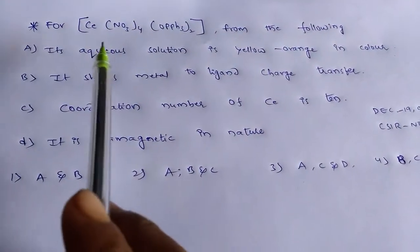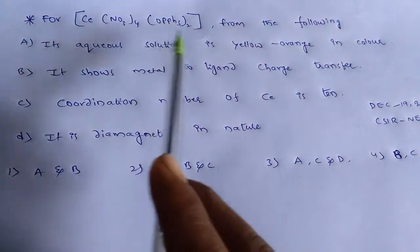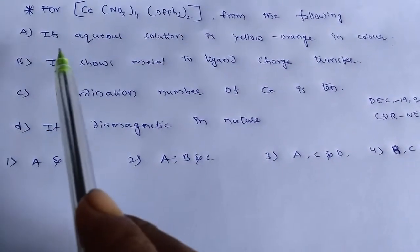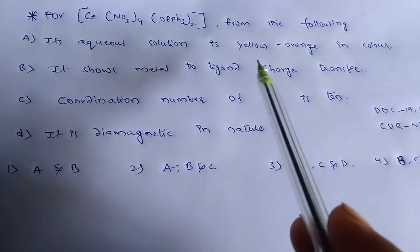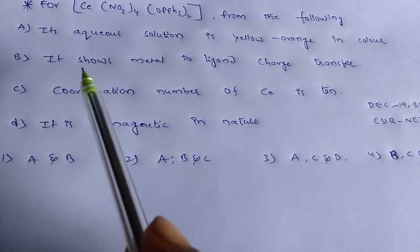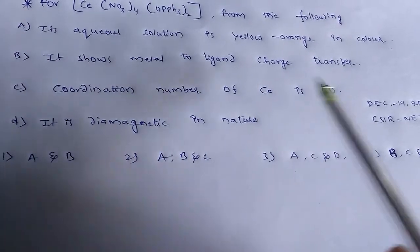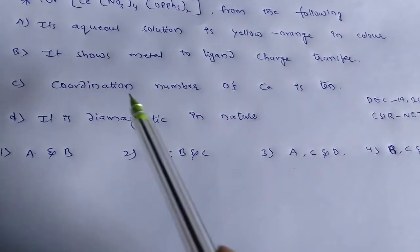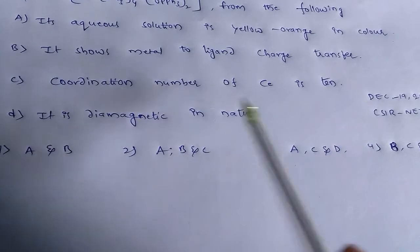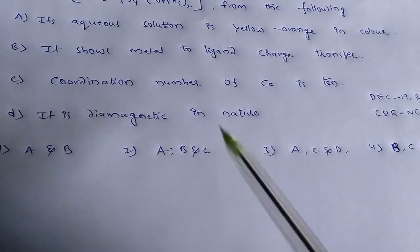The question is for the cerium complex from the following. A: Its aqueous solution is yellow-orange in color. B: It shows metal to ligand charge transfer. C: Coordination number of cerium is 10. D: It is diamagnetic in nature.